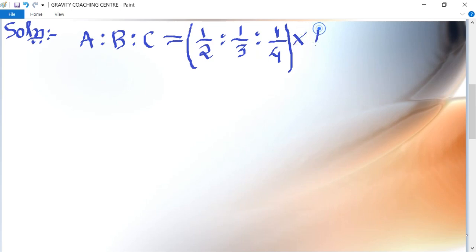Now multiplying with all the three parts, the first one becomes 6 ratio 4 ratio 3.